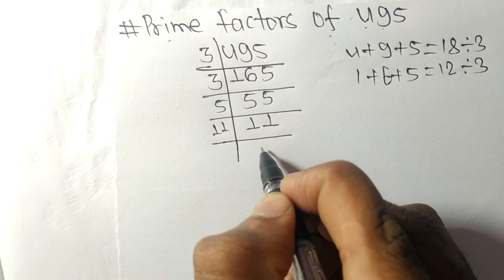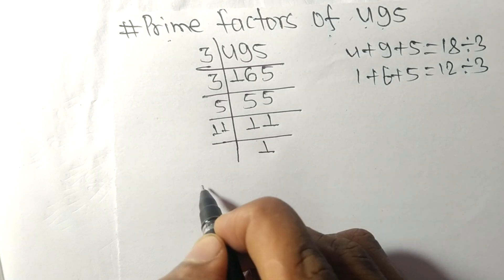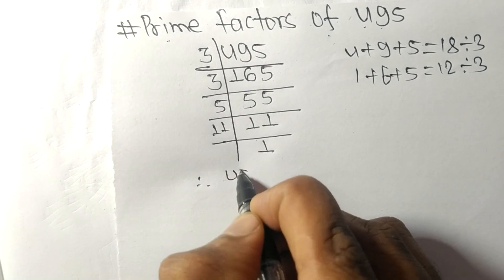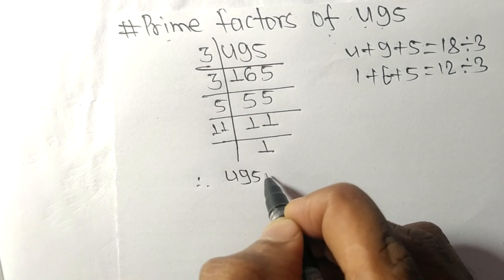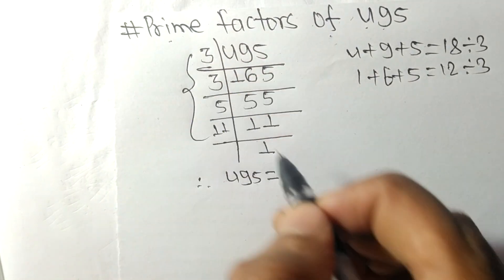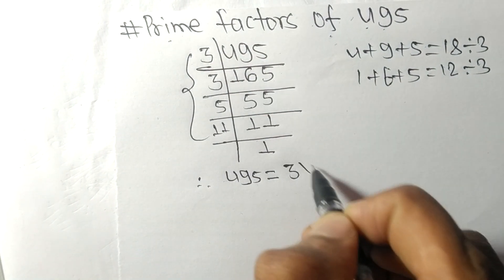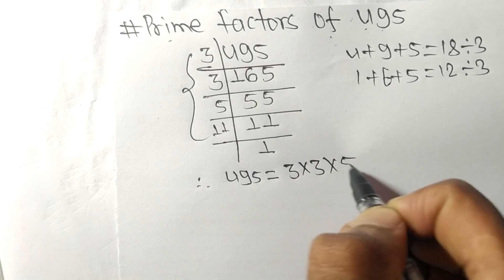11 itself, and we get 1. Therefore, 495 equals, from this side we have 3 times 3 times 5 times